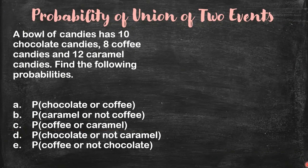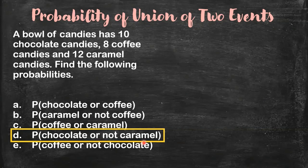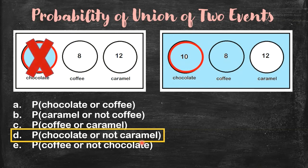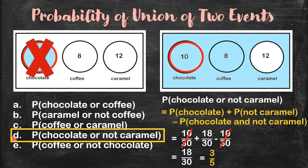Let's have letter D. This time, we get the probability of getting a chocolate candy or a candy which is not a caramel candy. Let's consider their Venn diagrams. You see, they have an intersection. When there is an intersection, you need to eliminate one to avoid double counting. Using this Venn diagram, the answer for letter D is 18 over 30, which is equal to 3 over 5. If you want to write the solution, it is similar to the solution for letter B.